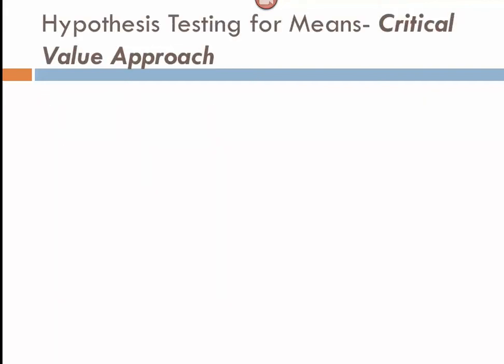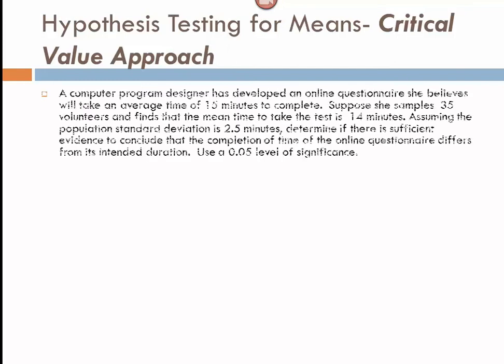Here is our first example. A computer program designer has developed an online questionnaire she believes will take an average time of 15 minutes to complete. She samples 35 volunteers and finds the mean time is 14 minutes. Assuming the population standard deviation is 2.5, determine if there is sufficient evidence to conclude the completion time differs from its intended duration.